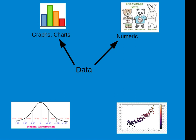We then talked about finding the position of the data, such as z-score and percentile. And finally, we talked about seeing relationships in data, such as with a scatterplot or with chi-squared.